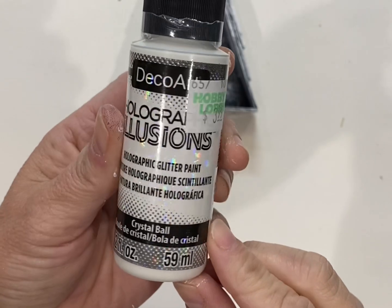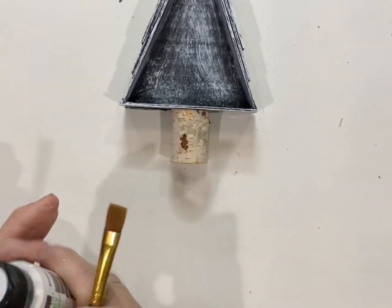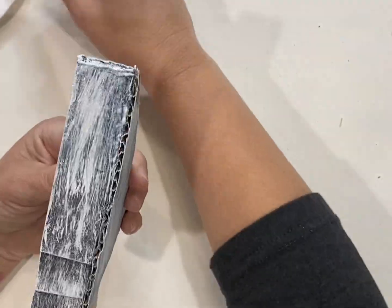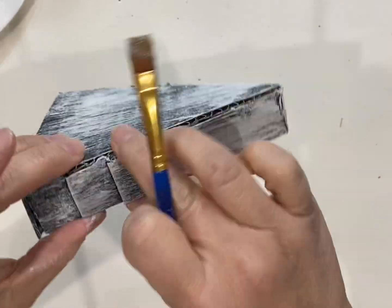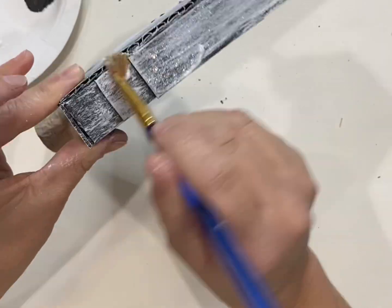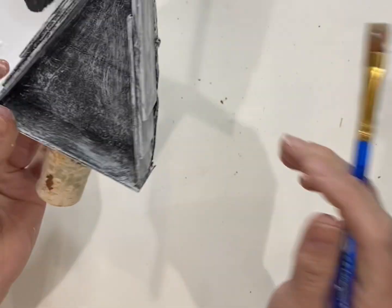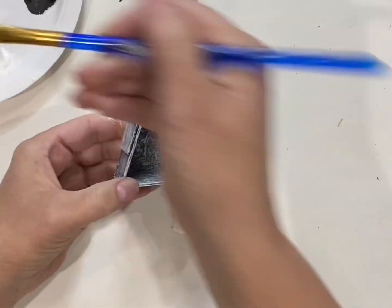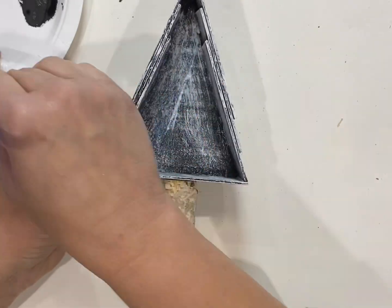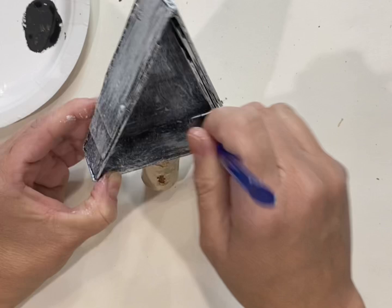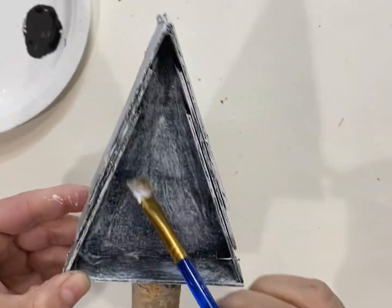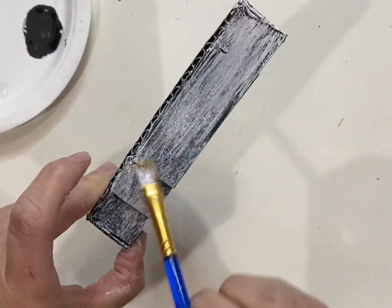Now I'm gonna use this Holographic Illusions DecoArt glitter that I'm just in love with. It is really, really pretty. I got it at Hobby Lobby and it adds a real pretty shimmer. You get that glitter effect and your glitter's not falling off everywhere. It's basically like Mod Podge with glitter in it, but I love it. It gives it such a sheen. You can't get the full effect on camera, but it is really, really pretty glitter.